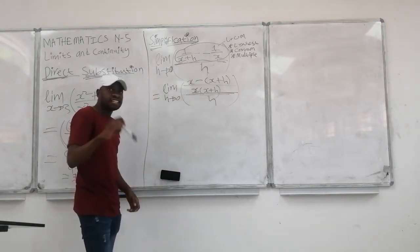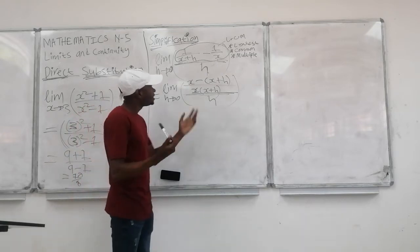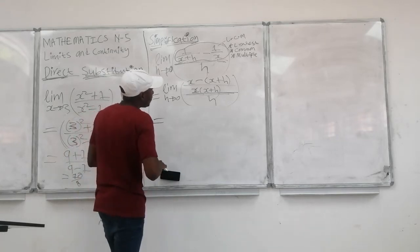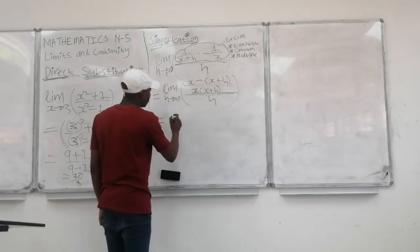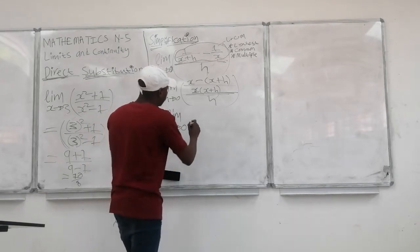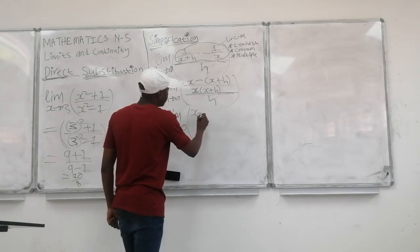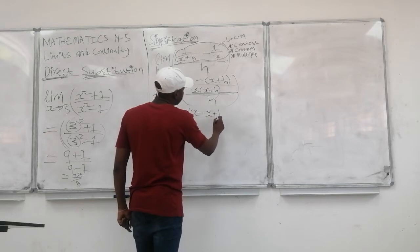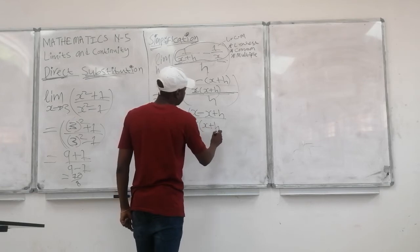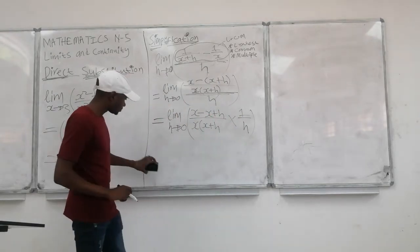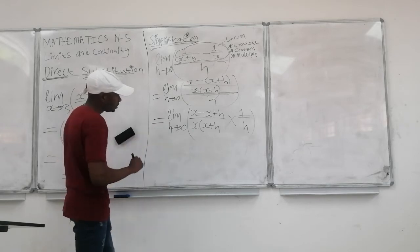My marker is not feeling okay today but I will finish. This is going to be equal to the limit when h approaches 0 of x minus (x plus h), all over x times (x plus h). This is going to be equal to negative h multiplied by 1 over h.